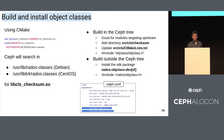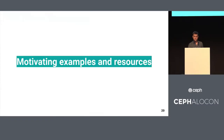The final thing you need to do is whitelist your module. Modules like RGW and RBD are already whitelisted, but for obvious reasons you don't want to be able to load any random binary. So you need to address these security issues and whitelist your module. And that's basically it.